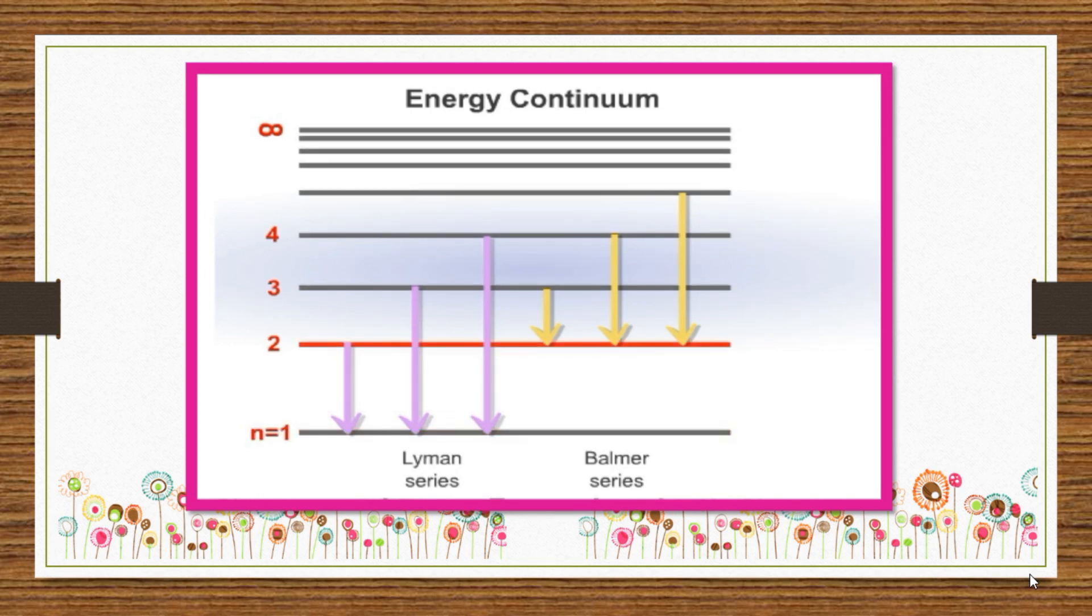Note that the energy levels become closer together as the quantum number of the orbit increases, and eventually, an energy continuum is reached.